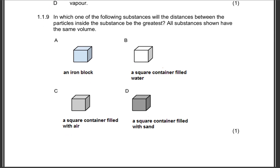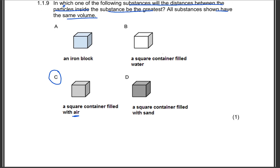Question 1.1.9: In which of the following substances will the distances between the particles inside the substance be the greatest? All substances shown have the same volume. Options are: iron block, a square container filled with water, rubber solid, a square container filled with air, or a square container filled with sand. The correct answer will be option C, because this container is filled with air. So the distance will be greatest in terms of the distance between particles.